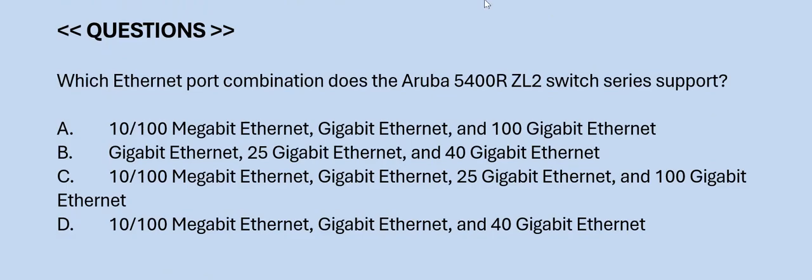Next question: Which Ethernet port combination does the Aruba 5400R ZL2 switch series support? Option A: 10/100 Megabit Ethernet, Gigabit Ethernet, and 100 Gigabit Ethernet. Option B: Gigabit Ethernet, 25 Gigabit Ethernet, and 40 Gigabit Ethernet. Option C: 1/100 Megabit Ethernet, Gigabit Ethernet, 25 Gigabit Ethernet, and 100 Gigabit Ethernet. Option D: 1/100 Megabit Ethernet, Gigabit Ethernet, and 40 Gigabit Ethernet. The correct answer is Option D.